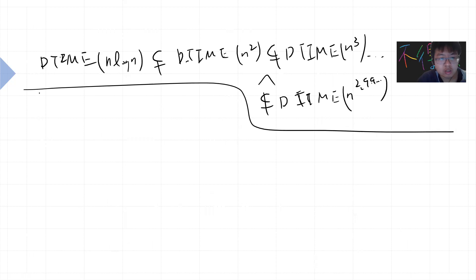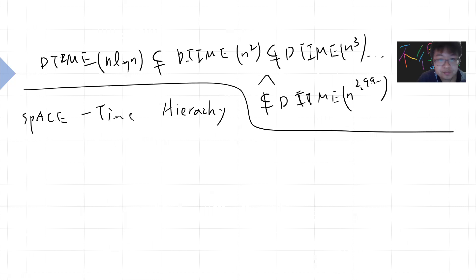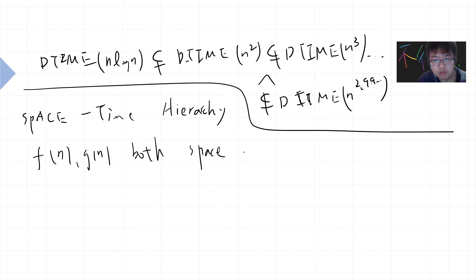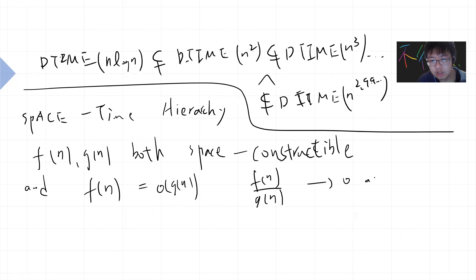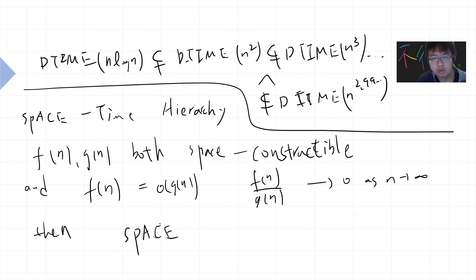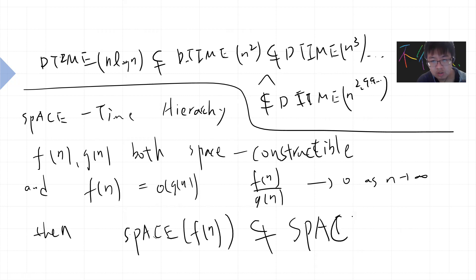There is also the space hierarchy theorem, which is similar to the time hierarchy theorem. Let's say f(n) and g(n) are both space-constructible, and f(n) is a small-o of g(n) — meaning f(n) divided by g(n) goes to zero as n goes to infinity. Then the set of problems decidable by a deterministic machine using only f(n) space is a strictly subset of those using g(n) space.